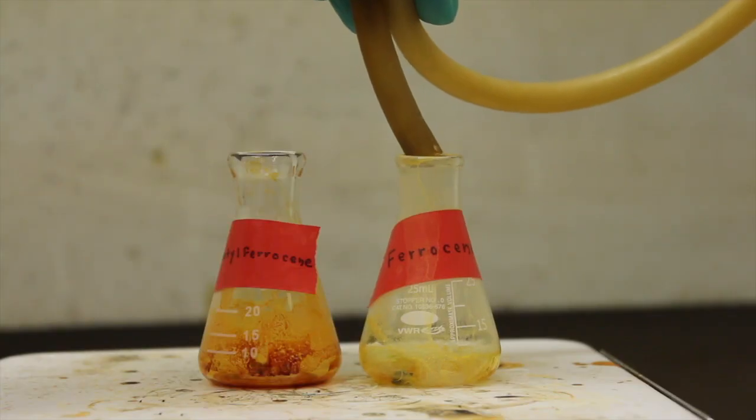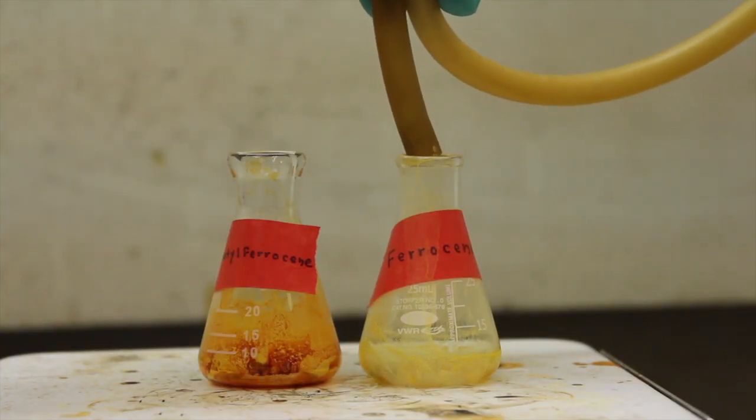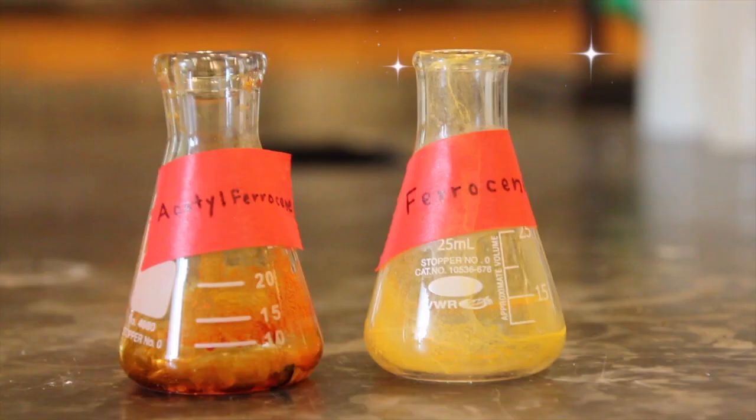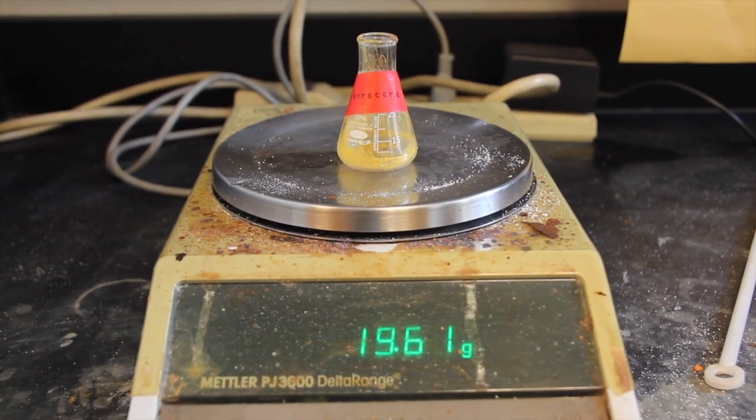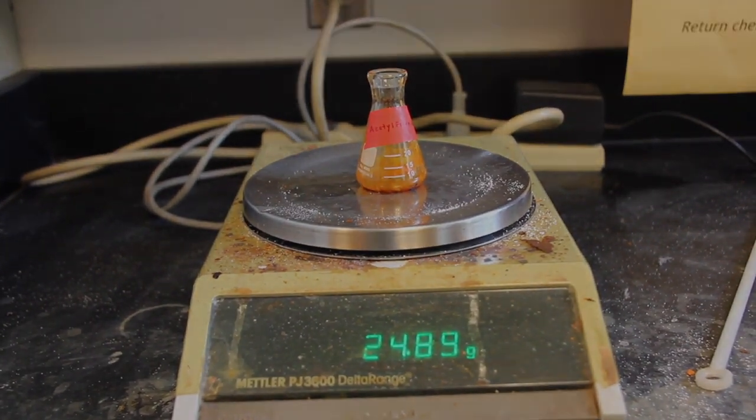Evaporate off the solvent over a steam bath under a gentle stream of air. If there is too much solvent for your flask, evaporate some of the solvent and then add the rest. When the solvent has been removed, weigh the flask again to determine your yield.